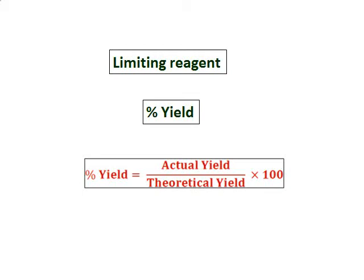We are going to focus on limiting reagent and we will calculate the percent yield. Percent yield is calculated using the formula: actual yield divided by theoretical yield times 100. We will go ahead and do some questions on limiting reagent.